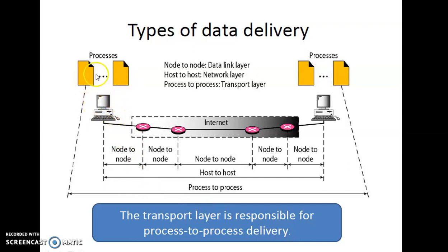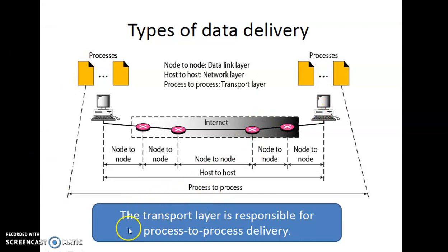Each and every computer runs multiple processes or applications. Let's say multiple applications are running — application A to application Z. Application A in the sending computer should communicate with application A only on the receiving computer. This is taken care of by the transport layer and is called process-to-process delivery. Similarly, process Z communicates with process Z only.